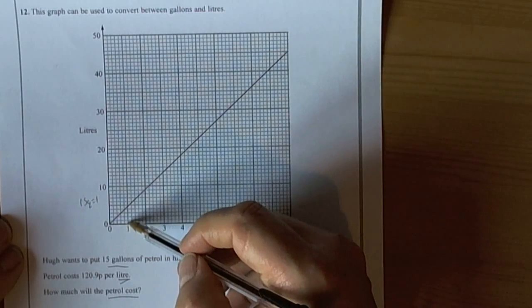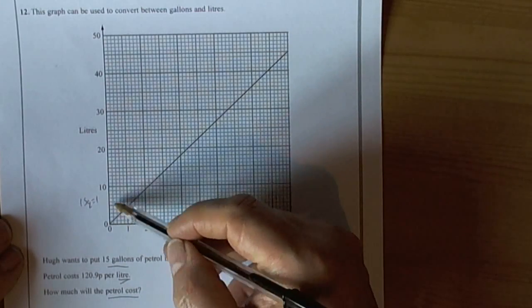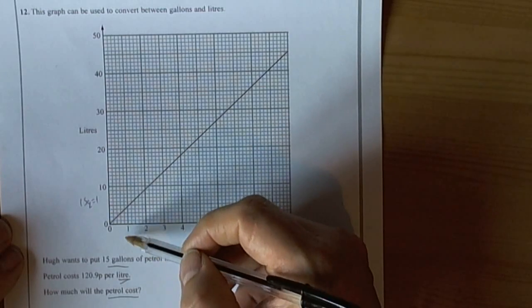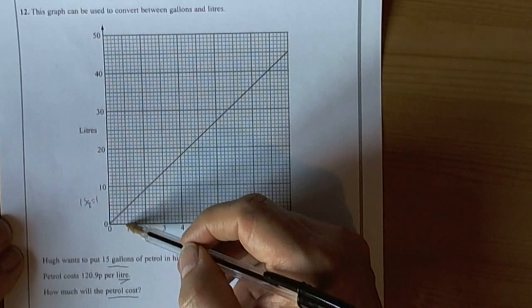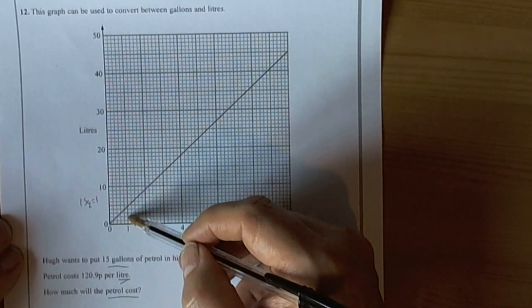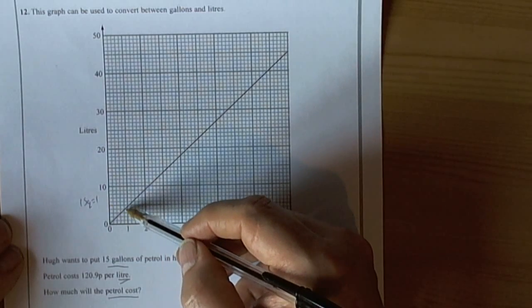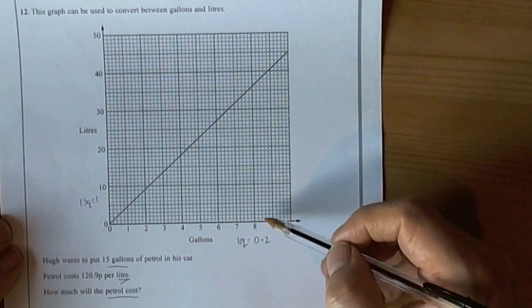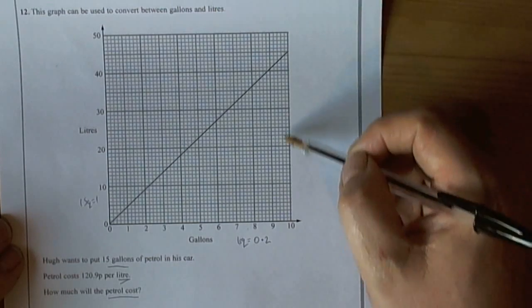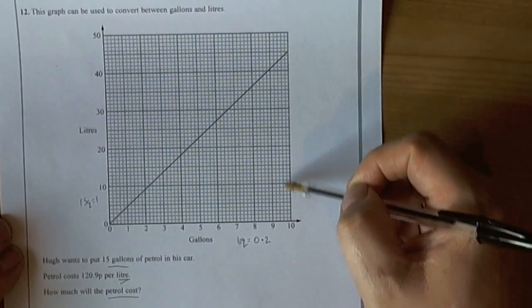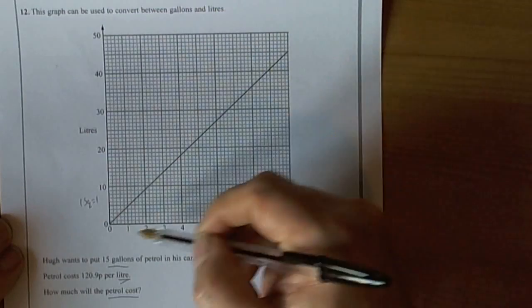So lots of ways of doing this. We could work out what 1 gallon is per so many litres and then times that by 15. That would give us a fairly inaccurate answer compared to what we could do, because what you try and do with conversion graphs is look at doing the biggest conversion you can so that you can get the best accuracy.